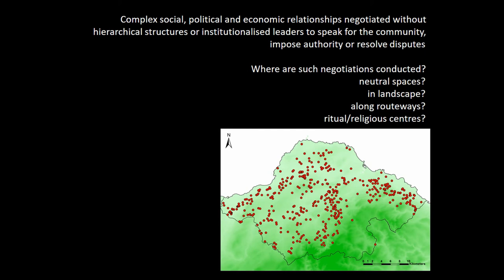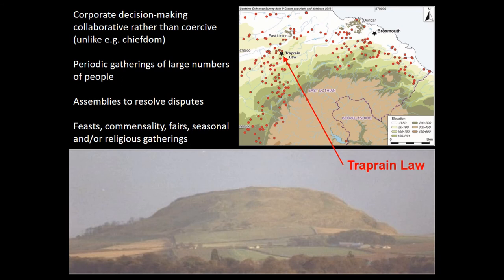So where do we look in a dense settlement pattern like this for the public spaces in which these kinds of decisions were made and these corporate issues were raised? We can think about routeways within the landscape, farming in the fields, maybe ritual or religious centers. This is a landscape that doesn't have large cemeteries as far as we know, and has no tumuli. But what we can perhaps see is the delineation of formal public spaces, which raises the question of the site of Traprain Law.